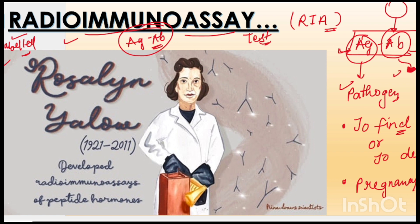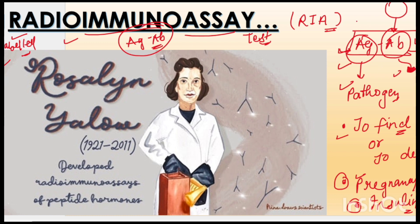RIA can be used to detect things like insulin inside the body. So we can find out pregnancy hormones, we can find out insulin hormone. For finding out pregnancy hormone or insulin hormone, we will use this RIA technique and procedure involving antibody detection.